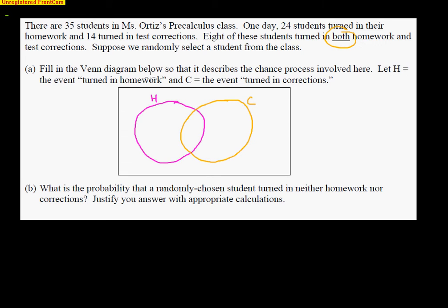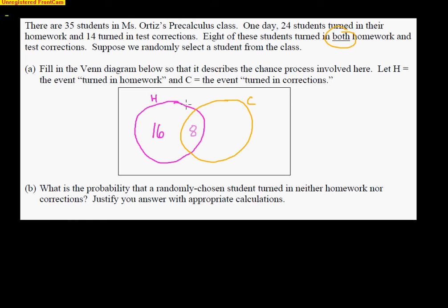24 kids turned in their homework, so the entire homework circle is 24. The entire test correction circle is 14. Eight students turned in both, so right in the middle goes the 8 students that turned in both. To figure out the homework-only section — 24 kids turned in their homework, and 8 of them also did their test corrections — that leaves 16 over here. The entire circle for homework is 24: 16 kids turned only homework in, not test corrections.